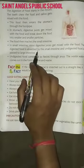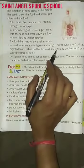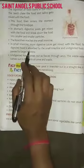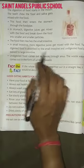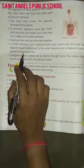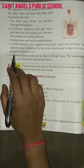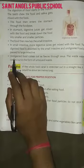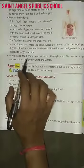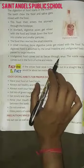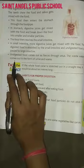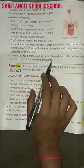The digested food is absorbed by the small intestine and undigested food is passed to the large intestine. The digested food comes out as faeces through the anus, in the form of waste.